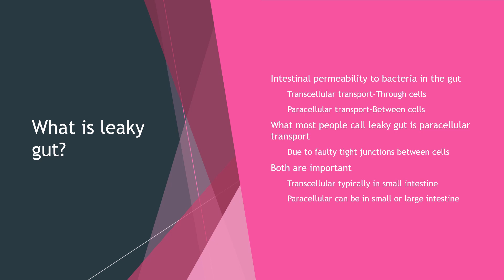Transcellular transport is also important. As it sounds, components of bacteria can squeeze through cells and get into the bloodstream. Both transcellular and paracellular transport are important and can both affect you negatively, and when combined, that's the worst case scenario. Transcellular transport typically happens in the small intestine, while paracellular can be in the small or large intestine — and it's particularly problematic in the large intestine, where most bacteria reside.